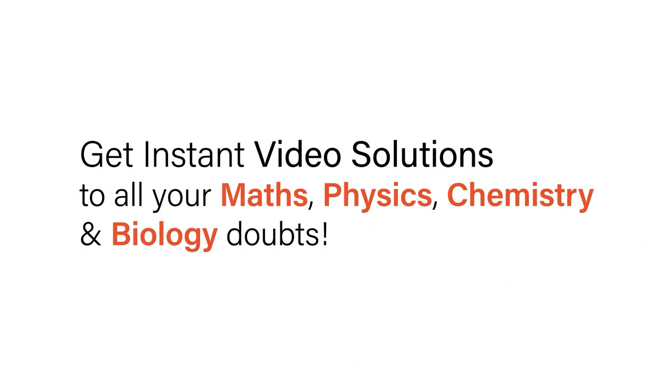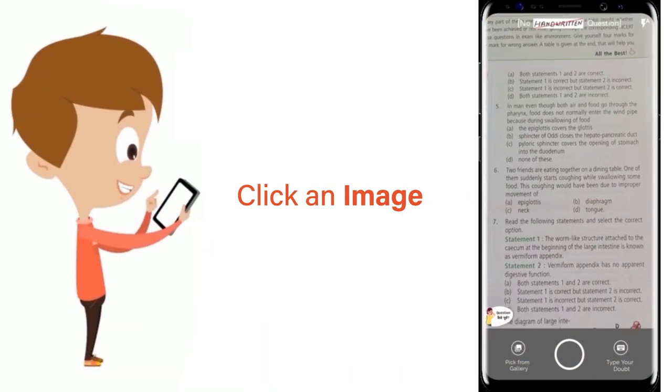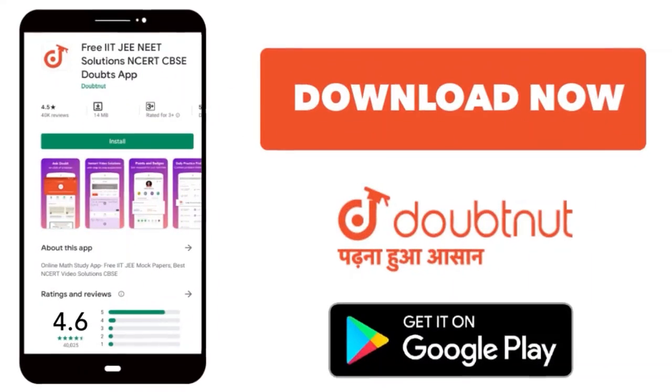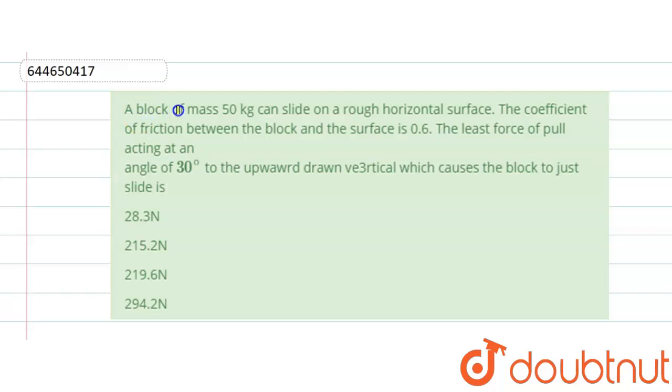With Doubtnet, get instant video solutions to all your maths, physics, chemistry and biology doubts. Just click the image of the question, crop the question, and get instant video solution. Download Doubtnet app today. Question is given: a block of mass 50 kg can slide on a rough horizontal surface.